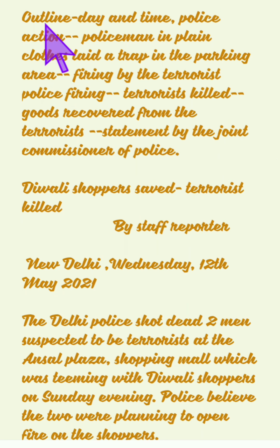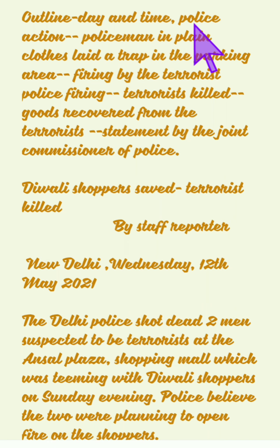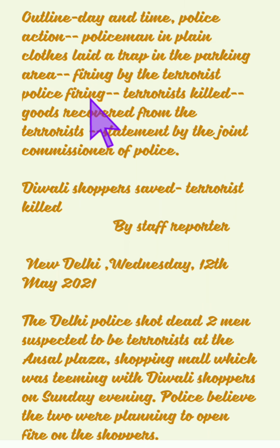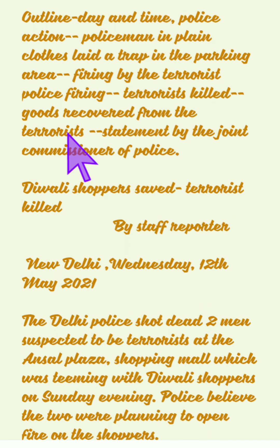Here is a model newspaper report. The outline has 6 points: 1. Day and time, police action. 2. Police in plain clothes laid a trap in the parking area. 3. Firing by the terrorist, police firing. 4. Terrorist killed. 5. Goods recovered from the terrorist. 6. Statement by the Joint Commissioner of Police.